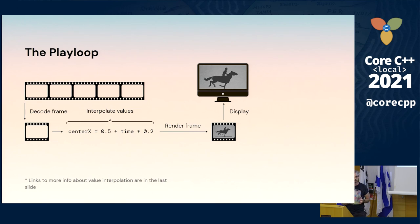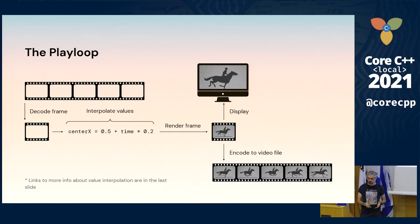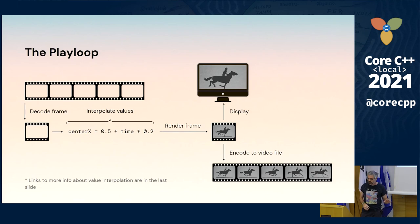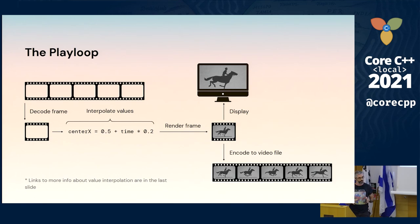That's the play loop where the user edits the video, plays it, and re-edits until happy. When they export, they do the same loop for every frame: decode a frame, interpolate values, render a frame, and instead of displaying each frame, they encode these frames into a new video file — creating a series of images and compressing them. I'll cover most of these steps in this talk, but I'll compress the interpolation step and treat it as part of the render frame step. There's another talk I gave linked at the last slide if you're interested in that depth.